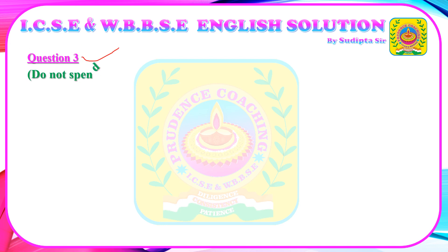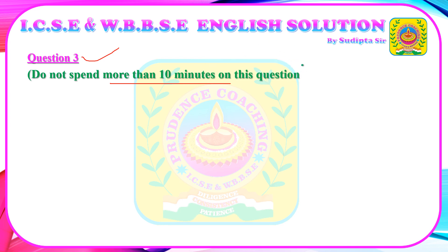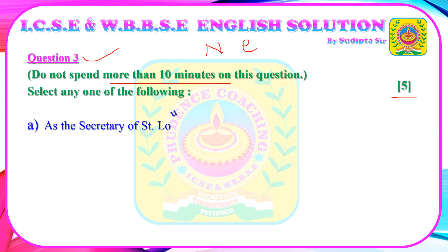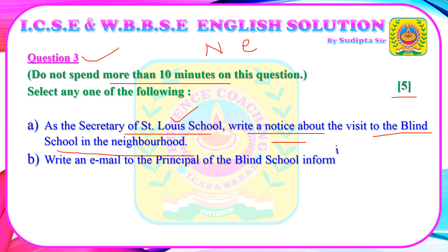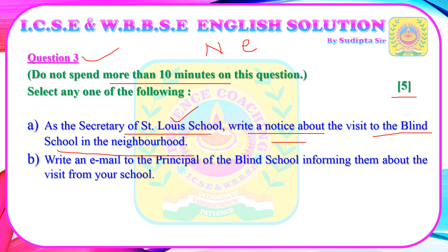Question 3. Do not spend more than 10 minutes on this question. This question is about notice or email writing, and you will get 5 marks. Option A: As the secretary of St. Louis school, write a notice about a visit to the blind school in the neighborhood. For the same topic, you may alternatively write an email to the principal of the blind school informing them about your visit. Choose either the notice or the email.